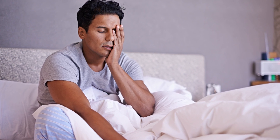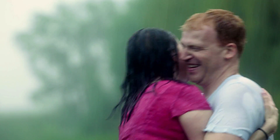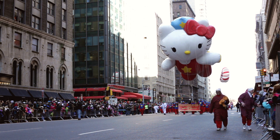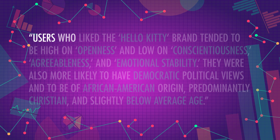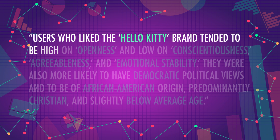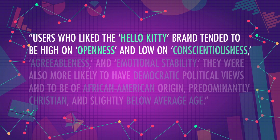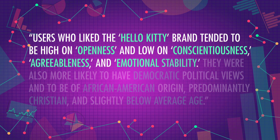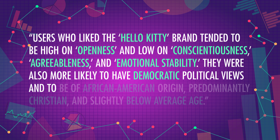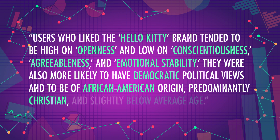Liking Wu-Tang Clan, Shaq, and being confused after waking up from naps pointed towards someone being a heterosexual man. A person's interest in Hello Kitty led to a surprisingly detailed prediction. The paper claimed users who liked the Hello Kitty brand tended to be high on openness and low on conscientiousness, agreeableness, and emotional stability. They were also more likely to have democratic political views, be of African American origin, predominantly Christian, and slightly below average age. This is a tiny piece of the puzzle that can give you a sense of big data in action. If a little bit of information about a person can actually reveal a lot, then multiply that by the tons of other data they're producing each day.